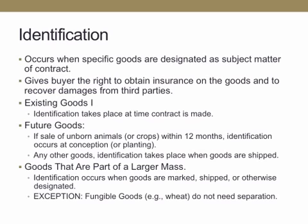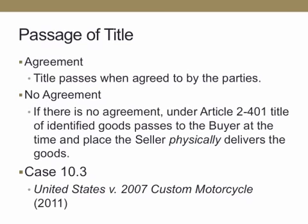So more than one party could insure goods. If they're existing goods, then identification takes place at the time the contract is made, and there are different rules for future goods or goods that are part of a larger mass. Passage of title: title passes when the parties agree. If they don't agree, under Article 2, Section 401, title of identified goods passes to the buyer at the time and place the seller physically delivers the goods. You can see an example of that in Case 10.3.